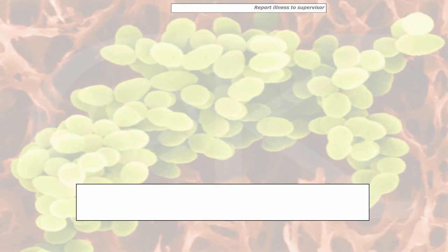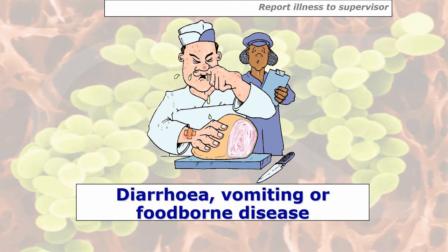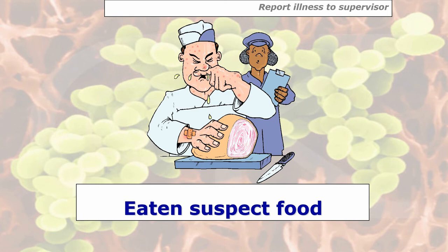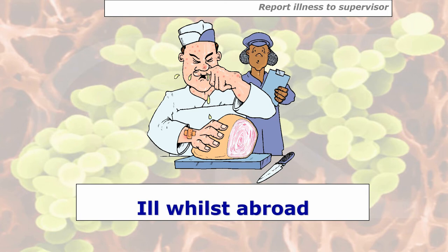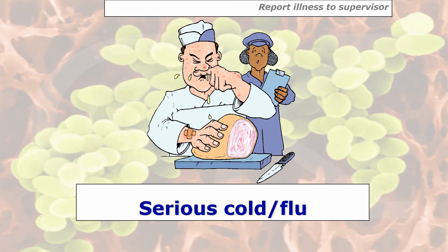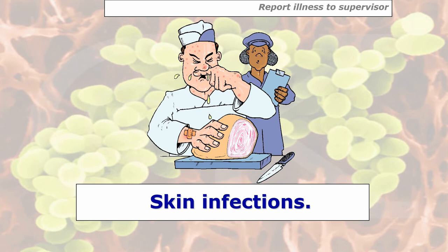Report illnesses to your supervisor. Certain illnesses must be reported: diarrhoea, vomiting, or any foodborne disease. If you've eaten any suspect food — for example at a party where others came down with food poisoning even if you didn't — you could become a carrier. Report any close family contact with members who have food poisoning symptoms. If you're ill whilst abroad, report it before returning to work. Also report septic cuts and boils, serious colds and flu which promote coughing, and any skin infections.